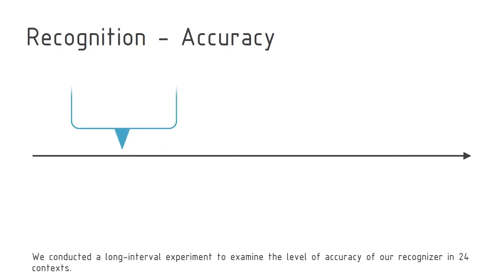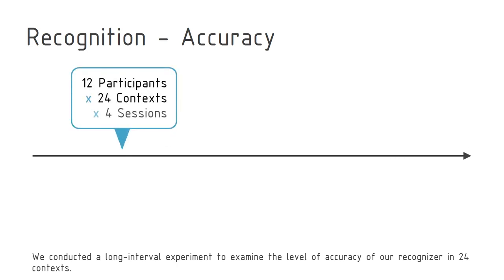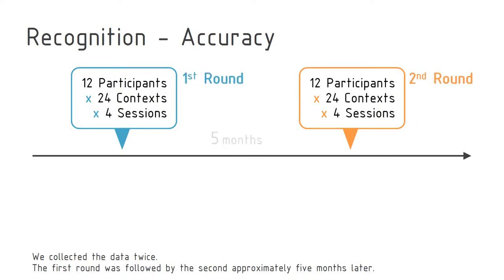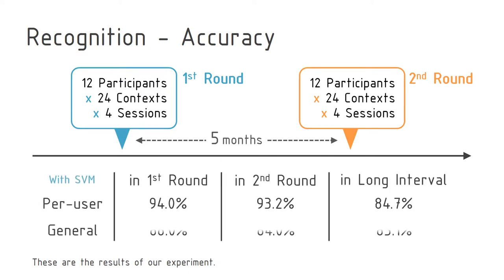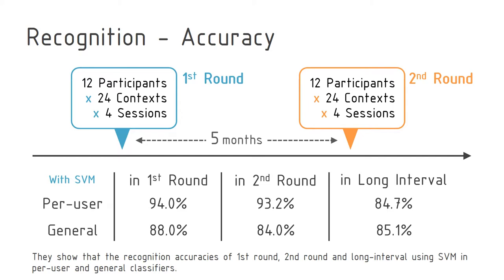We conducted a long interval experiment to examine the level of accuracy of our recognizer across 24 contexts. We collected the data twice; the first round was followed by the second approximately five months later. These results show the recognition accuracies of the first round, second round, and long interval using SVM in per-user and general classifiers.